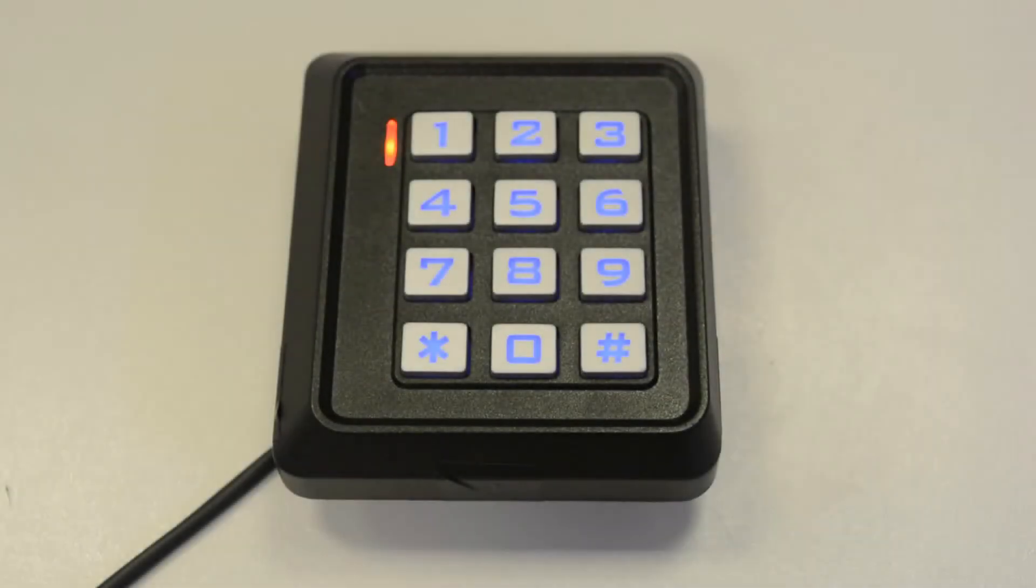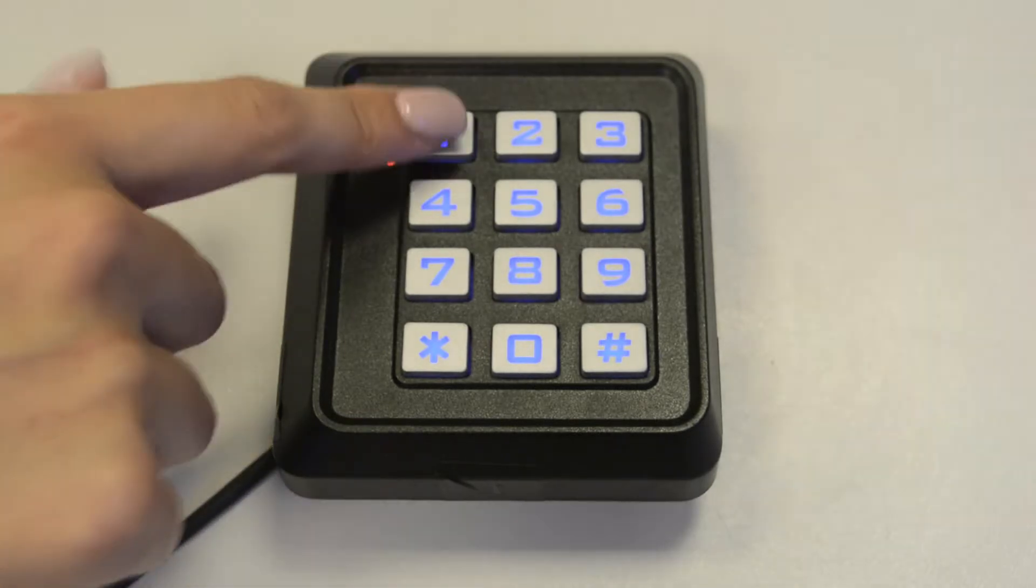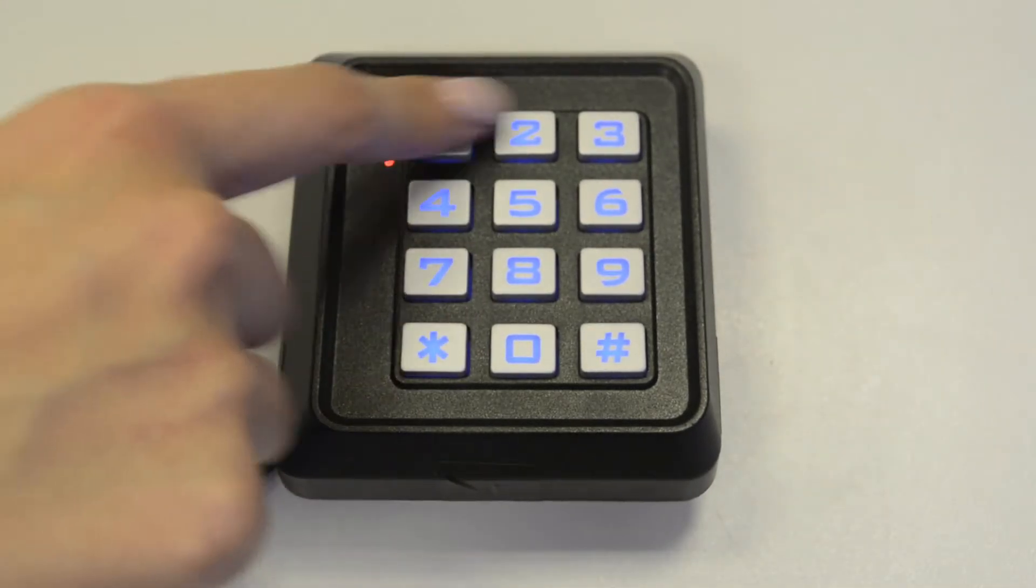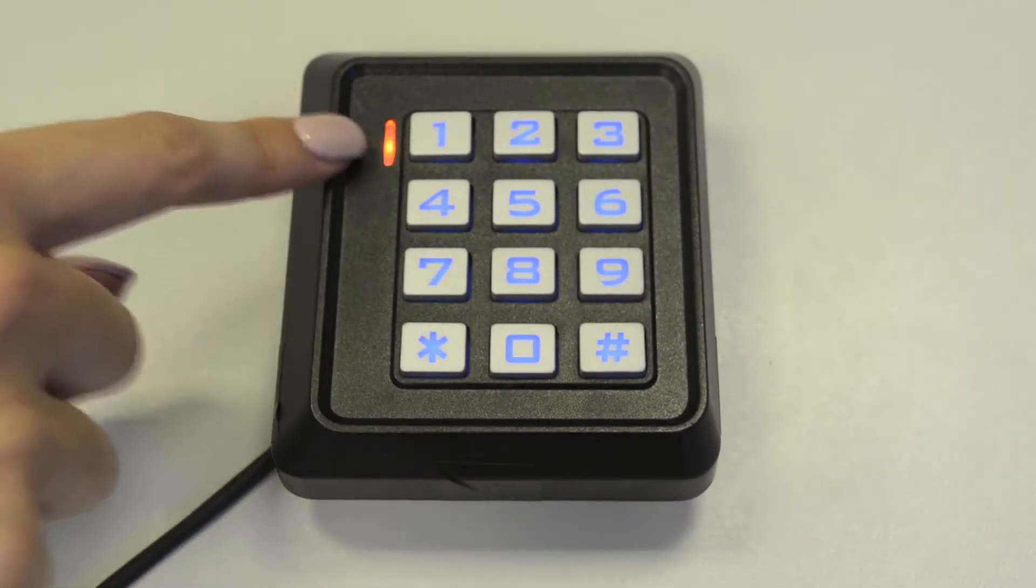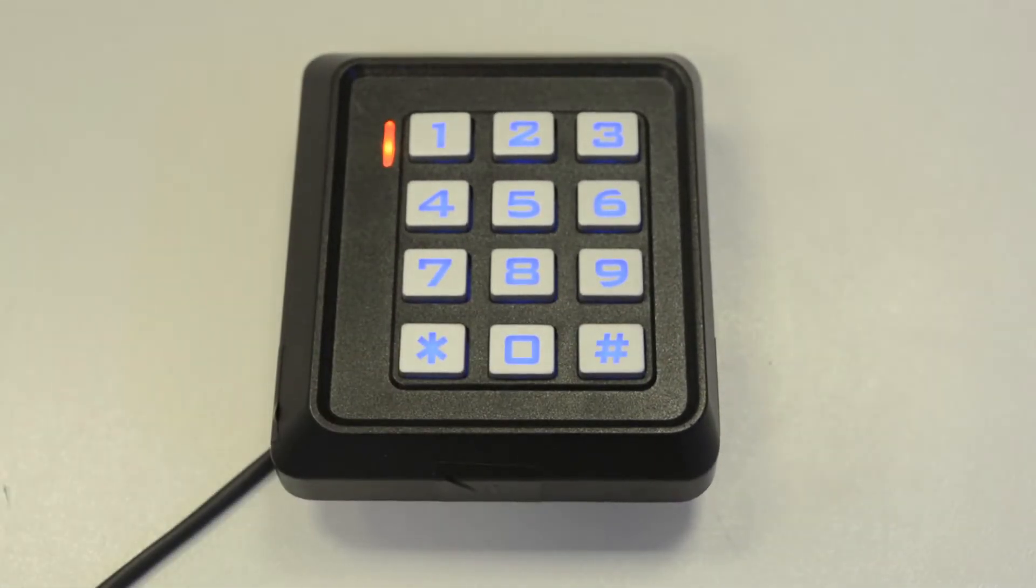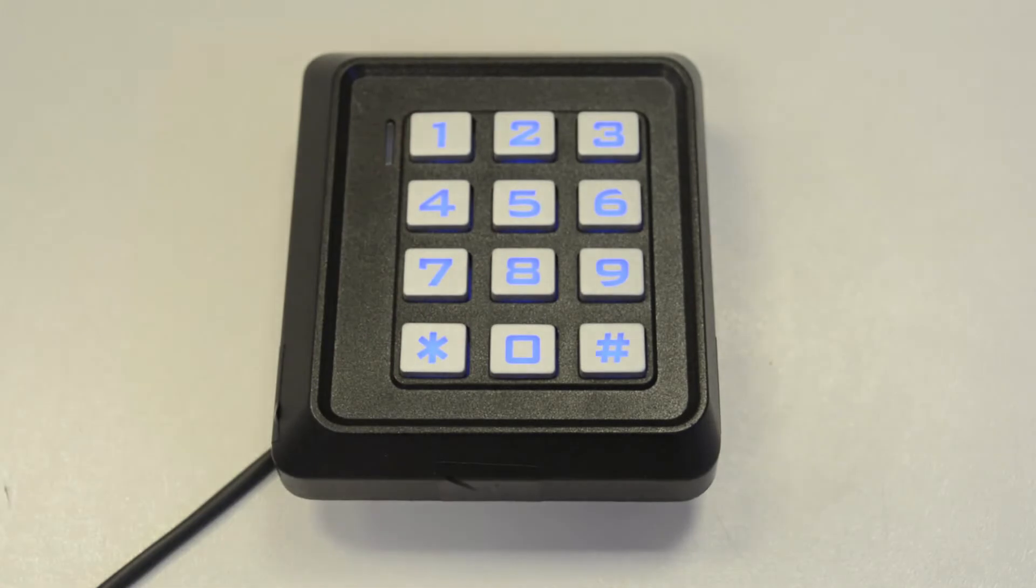So now you've changed your master code, let's see if it works. Press star, enter your code, press hash. The green will confirm that you've entered programming mode and press star to exit programming mode.